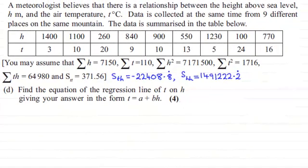Hi there. Now for this question, part d, we're asked to find the equation of the regression line of t on h, giving your answer in the form t equals a plus bh for four marks. I've also included these two values here that we found from part a, s_th and s_hh. So if you'd like to have a go at this question, haven't done so already, then I'll give you time to just pause the video.